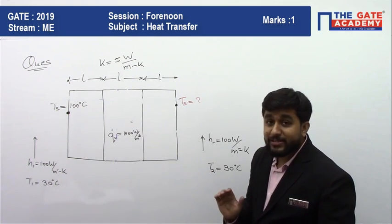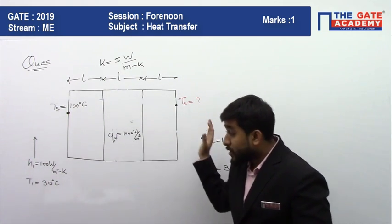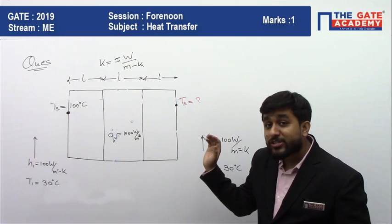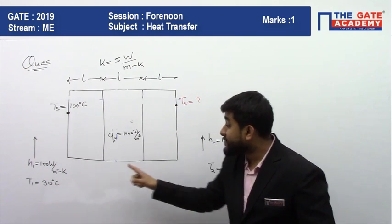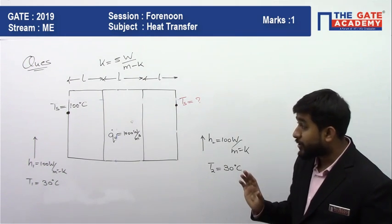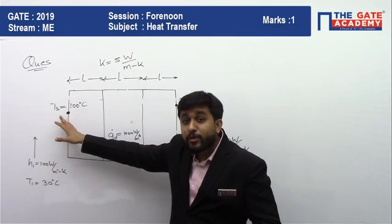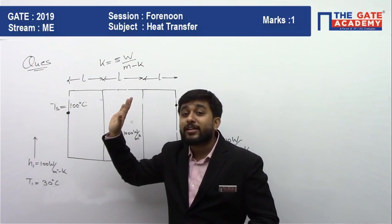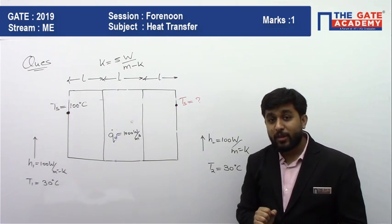What they are asking is: if on both sides this composite slab is exposed to fluids of the same condition, and the left hand side temperature is 100 degrees Celsius, then what will be the temperature on the right hand side?